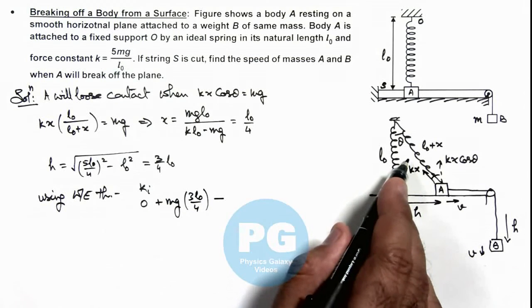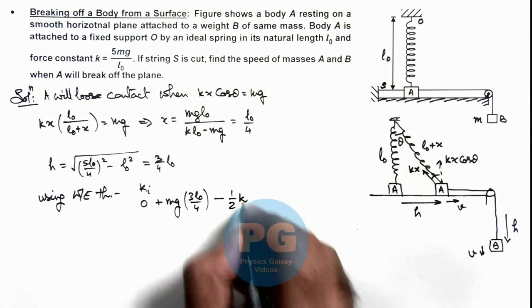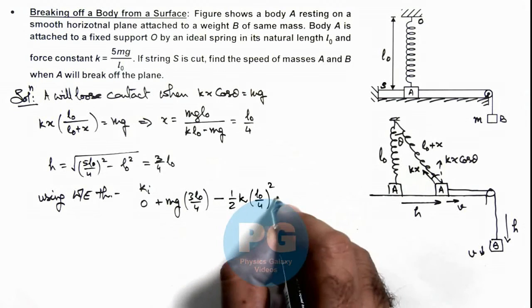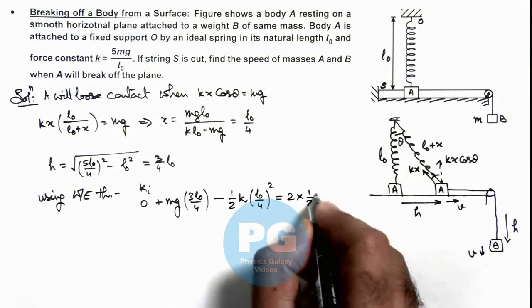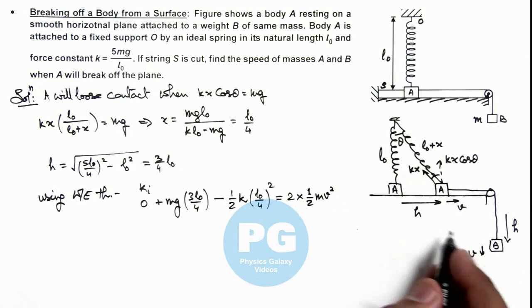the energy absorbed by the spring: ½kx² = ½k(l₀/4)². This equals the final kinetic energy: 2·(½mv²) = mv². Since the two blocks are attached with a string, they move with the same speed.